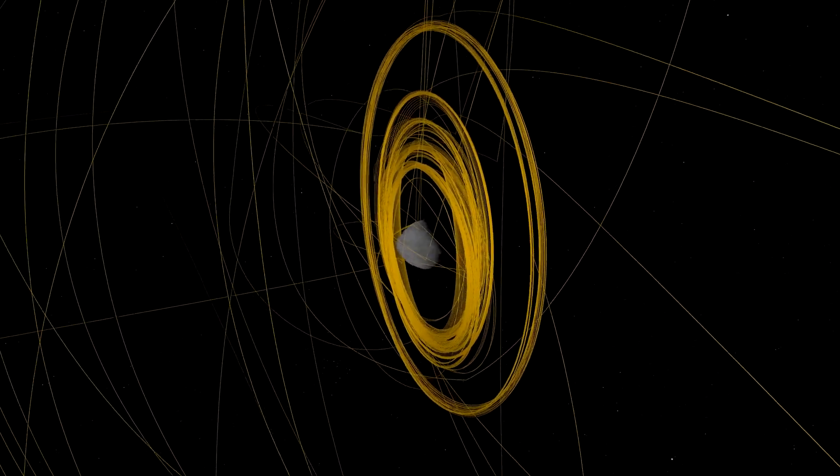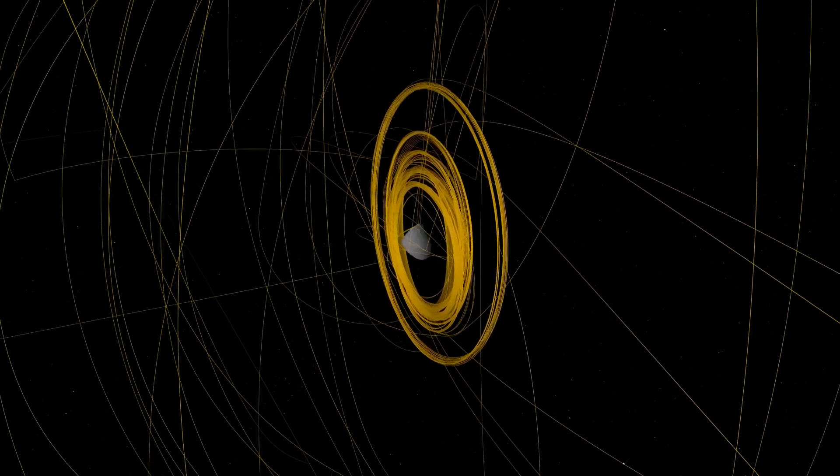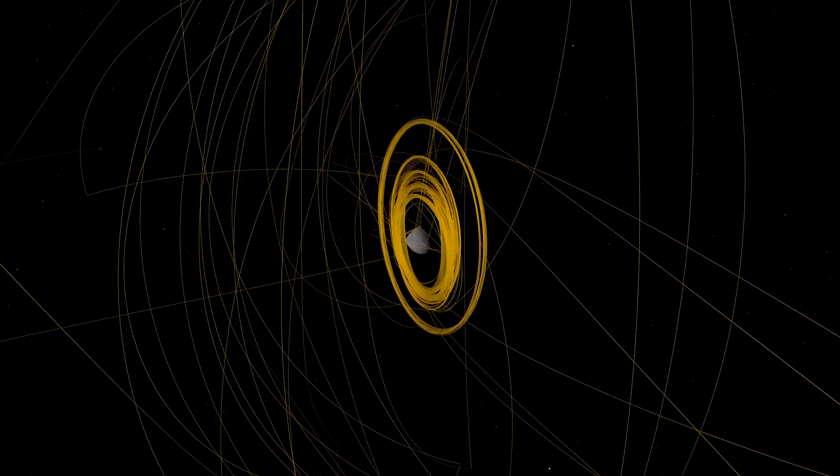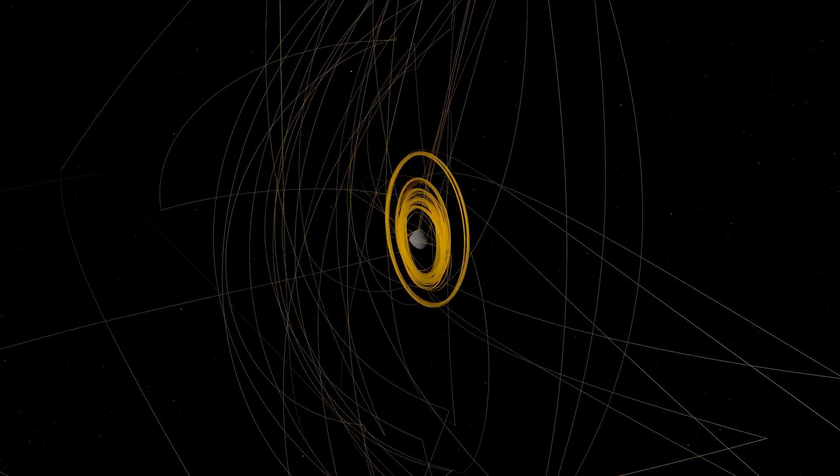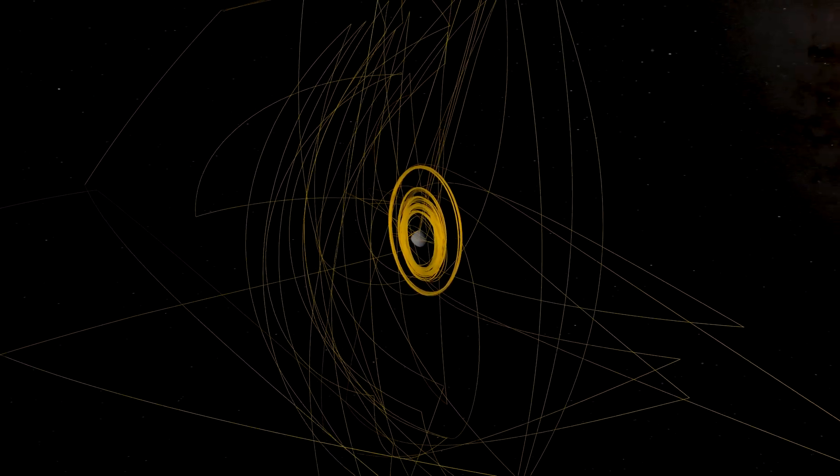Following TAG, the spacecraft drifted to a safe distance away from Bennu. By the end of October, mission controllers determined that it had exceeded its goal of collecting 60 grams of asteroid material.